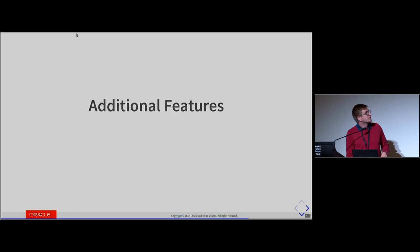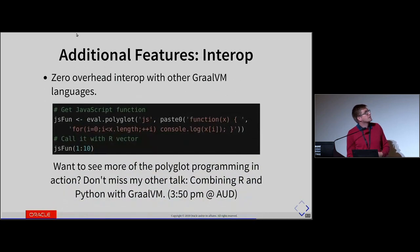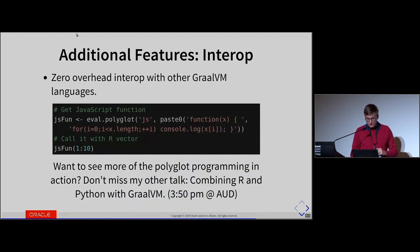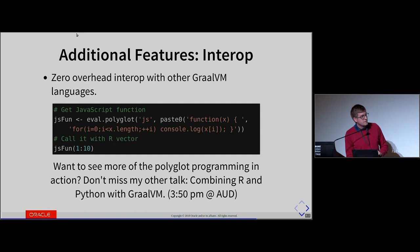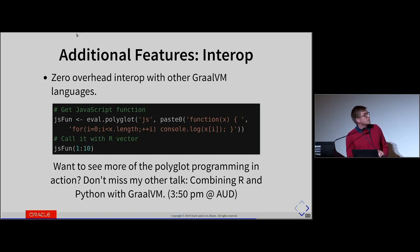Additional features: because FastR is a citizen of the Graal world, we can interoperate with other languages implemented on Graal. This is an example of interop with JavaScript. I'll talk more about this again at 3:50 p.m. in the auditorium.